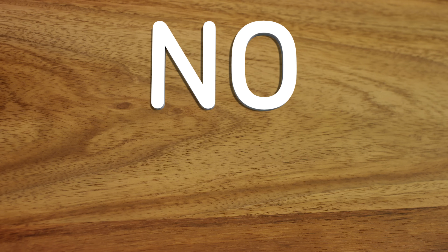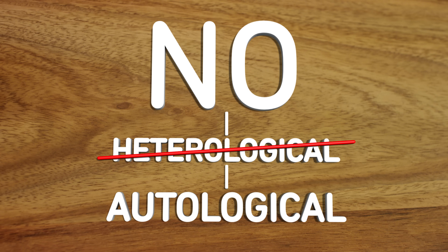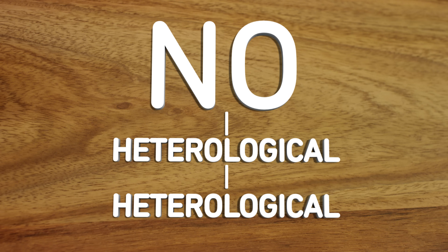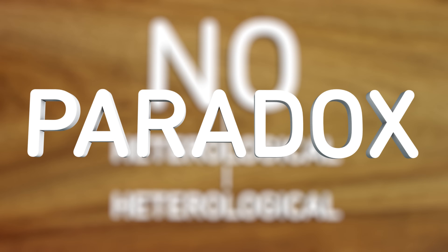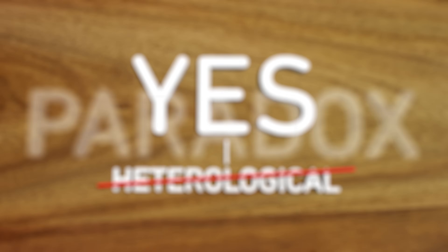The paradox comes into play when we ask: is the word 'heterological' heterological? If you say no, then heterological does not describe itself, and if it's not heterological, then it must be autological and describe itself. But if it is autological, then heterological describes itself, and therefore heterological is heterological — paradox. If you say yes, heterological does not describe itself, then that means heterological is not heterological — paradox.